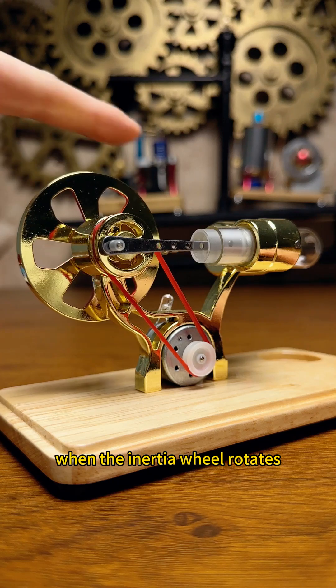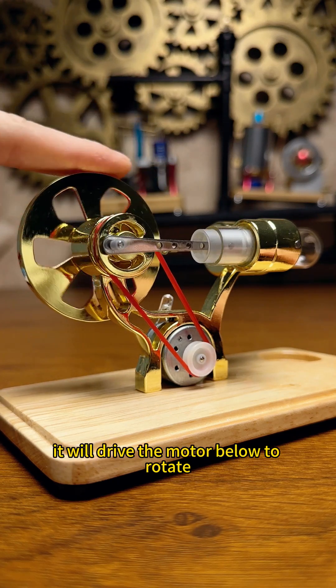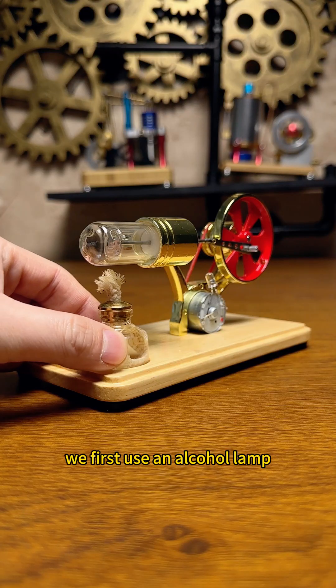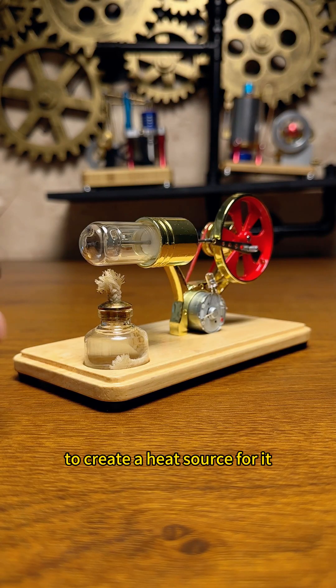When the inertia wheel rotates, it will drive the motor below to rotate to generate electricity. We first use an alcohol lamp to create a heat source for it.